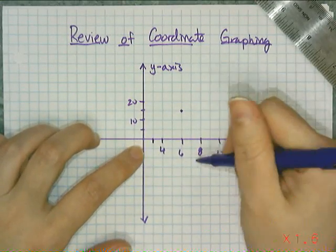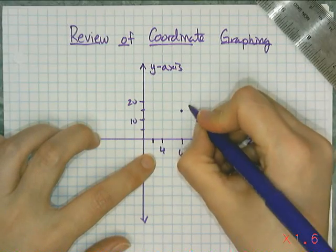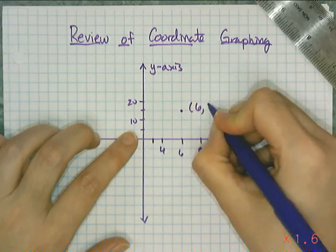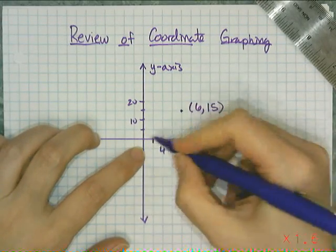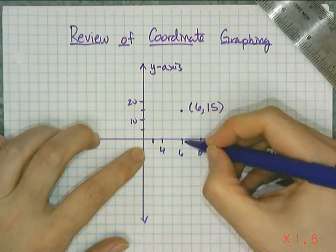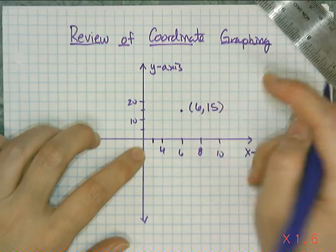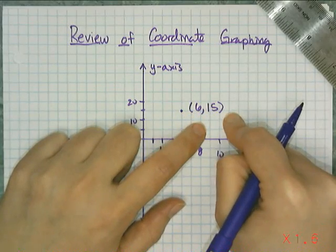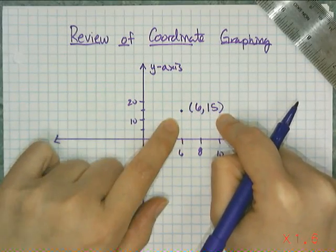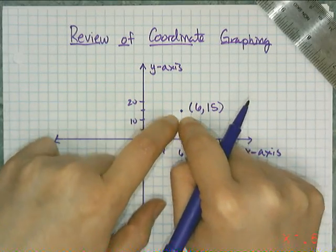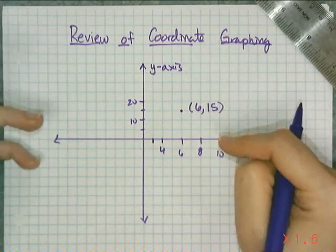And so then the location of this point is now 6, 15. Because I always locate my point using the x-axis value first, and then the y-axis value next. This number here, 6, 15, is called an ordered pair. And it tells everyone where this point lives in relation to the other points that I might graph.